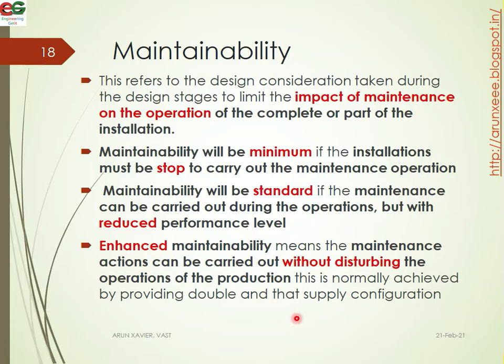Enhanced maintainability is normally achieved by providing double and supply configurations. Maintainability is divided into three types: minimum, standard, and enhanced. In minimum, the installation must be stopped. In standard, operations continue with reduced performance. In enhanced, maintenance is done without disturbing production.